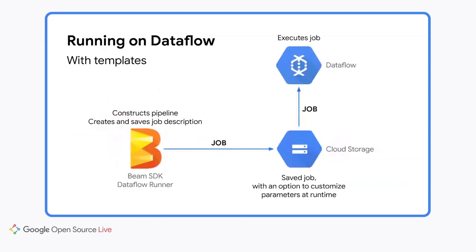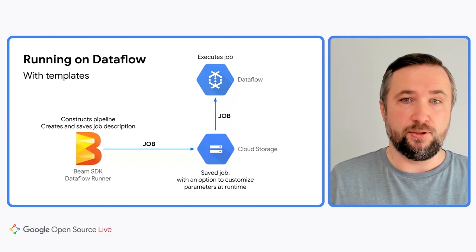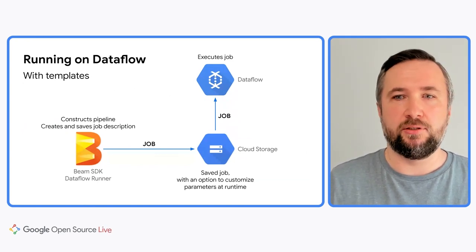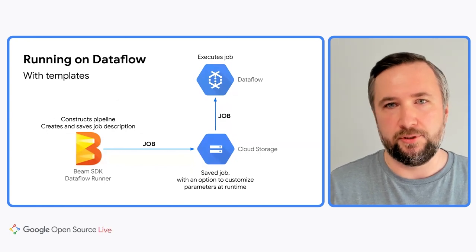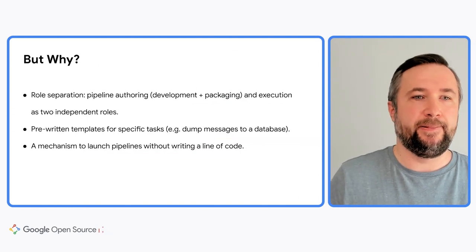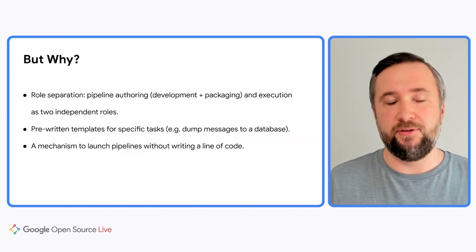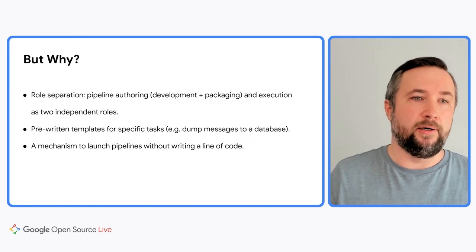With templates, we add an additional step in the middle. You still write the pipeline and execute it using the Dataflow runner, but at the time of execution, the job description is not submitted to the Dataflow service directly. Instead, it is serialized and saved to Cloud Storage, together with all the dependencies for later use. When it's time to actually run the job, one can start it just once or multiple times from Cloud Storage, without the need to rebuild it from source or provide the binary artifacts like JAR files if it's a Java pipeline, and with an option to customize the parameters on every run. Why would you need something like this? First of all, role separation — development and execution could be two independent roles with different permissions. Second, pre-written templates for specific tasks, like dumping messages from a messaging system to a database. And lastly, it's just a mechanism to launch your pipelines without writing a line of code.